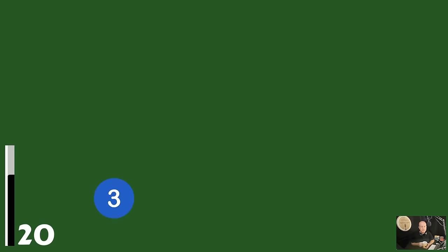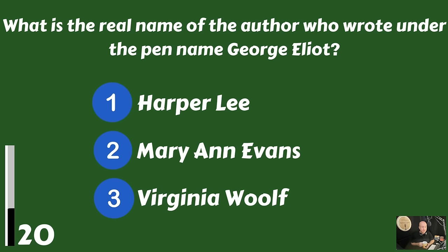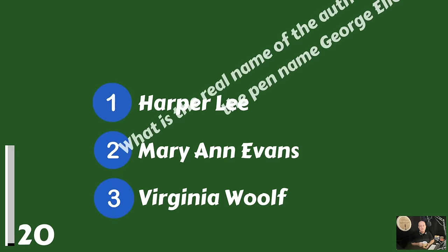What is the real name of the author who wrote under the pen name George Eliot? Was it Harper Lee, Mary Ann Evans, or was it Virginia Woolf? That was Mary Ann Evans.